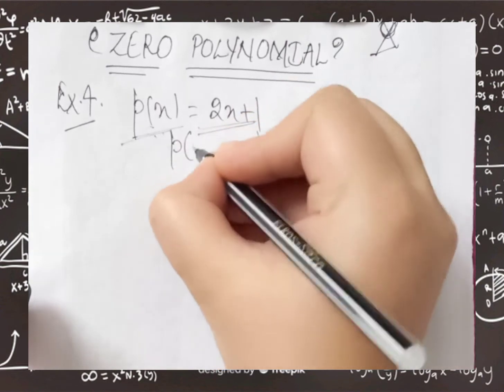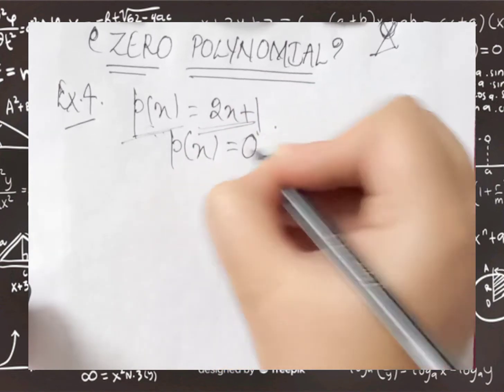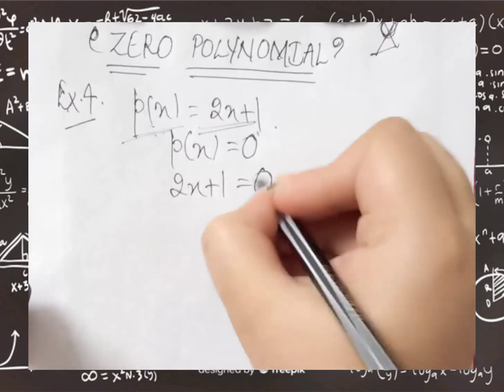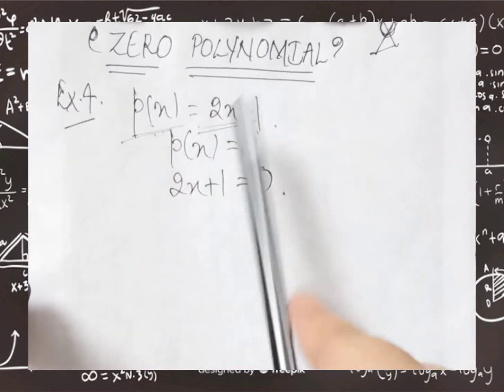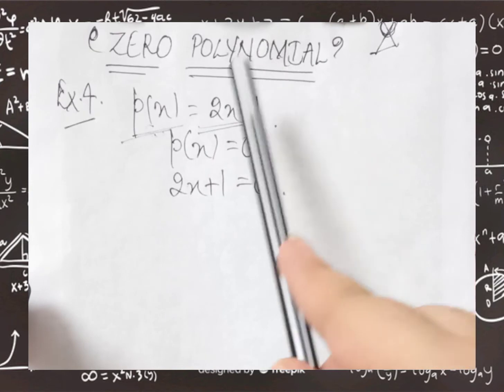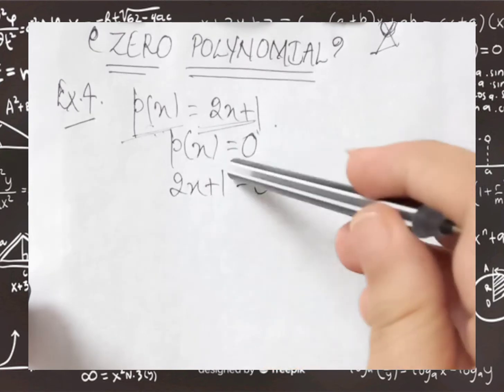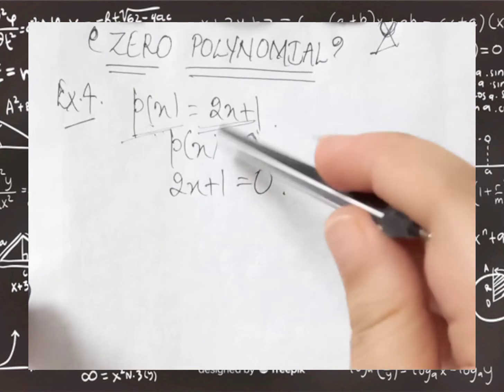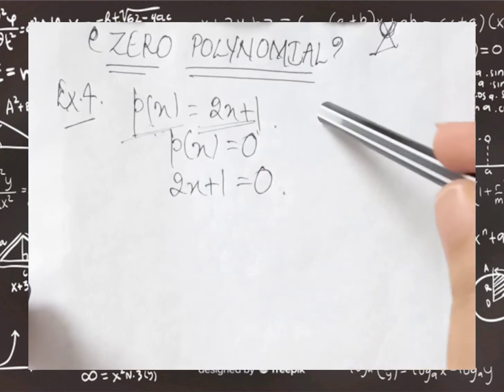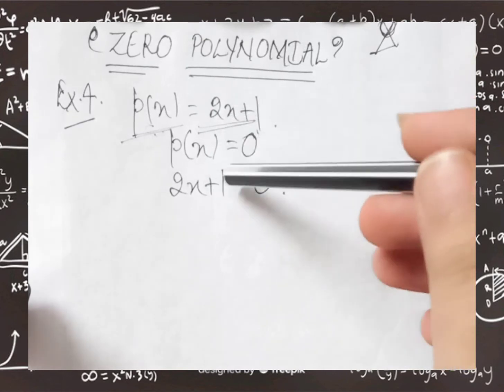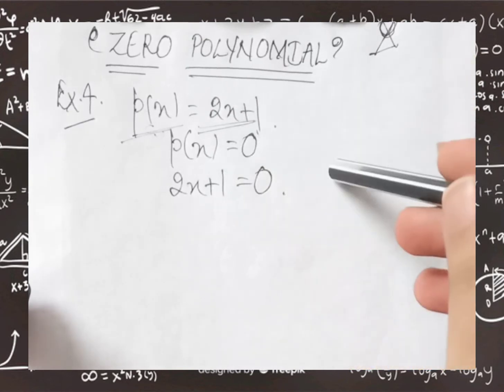We will put this x value 0, px value of this x we will put it in the place and px will put the equal 0 of the polynomial.